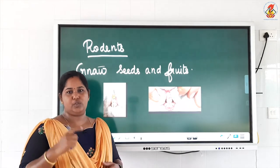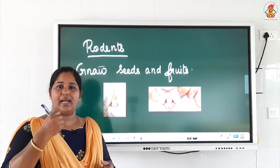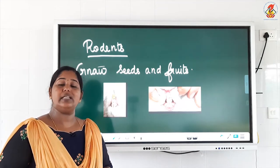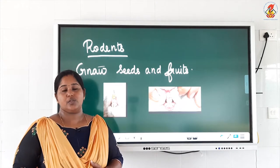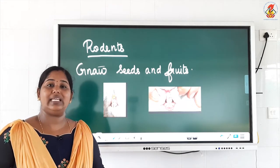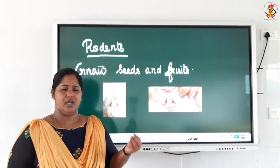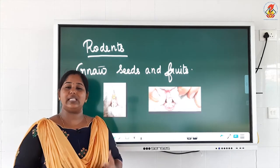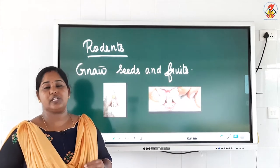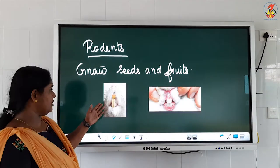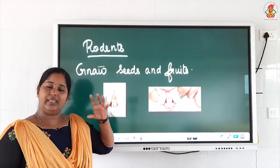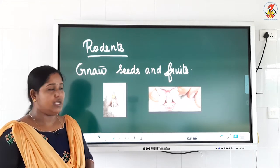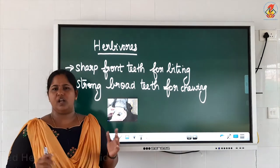Gnawing means repeated biting. You have seen a carrot bitten by a rabbit — it repeatedly bites. That repeated biting of a food item is called gnawing. Rodents gnaw seeds or fruits. Some rats, squirrels, and all eat seeds, so they gnaw the seeds and fruits with the help of their small sharp teeth. Even though the teeth are small, they are sharp so they can bite the food item faster.